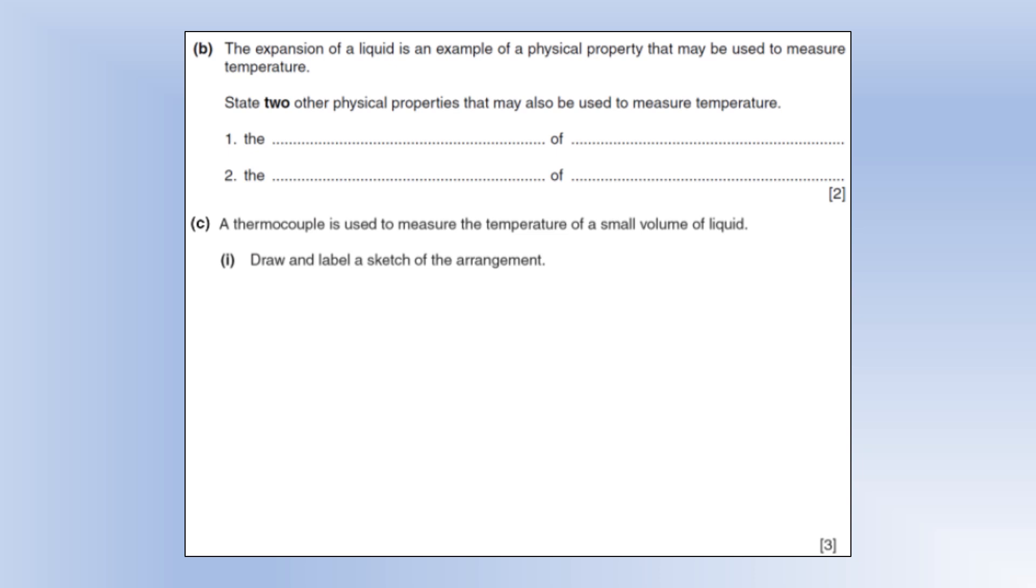So the expansion of liquid is an example of a physical property that may be used to measure temperature. State two other physical properties that may also be used to measure temperature. So one is the resistance of a thermistor. So a thermistor's resistance changes with temperature. It's inversely proportional to temperature, in fact. So that's one property you can use. And the other thing that we've come across as part of thermophysics is the potential difference across a thermocouple. Again, we'll look at more what that is as part of the thermophysics course.